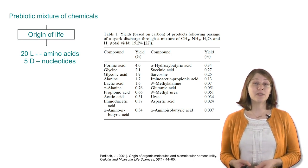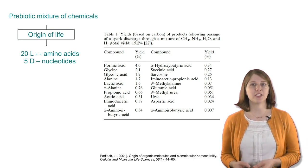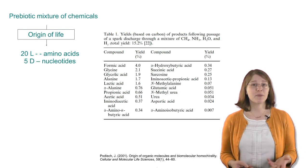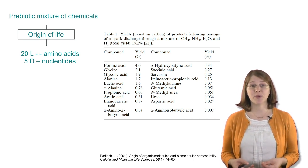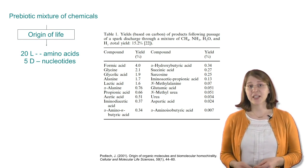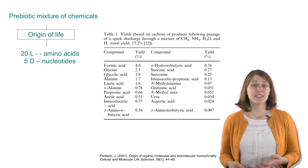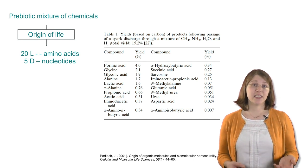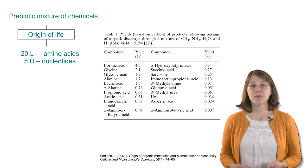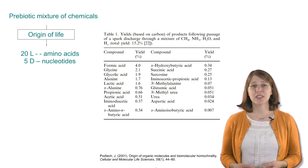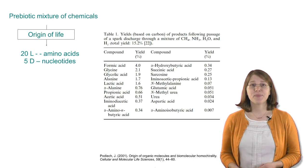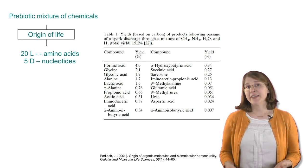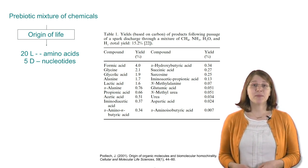This is the yields from our spark discharge experiment. And this chemical mixture is not necessarily what you would see if you, for example, ground up a bunch of cells and looked at their chemical composition. It consists of some amino acids like glycine and alanine in pretty significant amounts, but it also contains some other molecules like hydroxybutyric acid, which you might not say is really important for living things. And so how did life select these chemicals from this mixture?